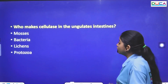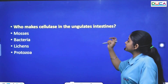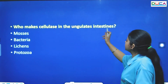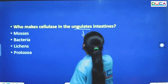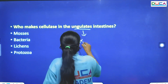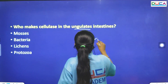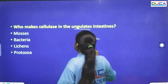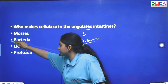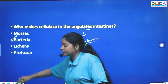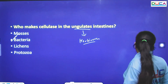The next question: Who makes cellulase in the ungulate intestine? Ungulates are herbivores. The cellulase in the intestine is made by bacteria.